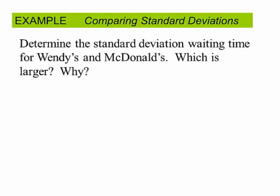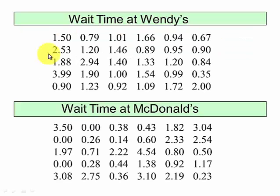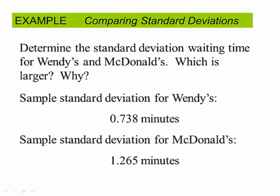Okay, let's go back to our McDonald's and Wendy's example. If we were to take this data set here from this sample and the one from this sample and compute the standard deviations of both, you would see that the standard deviation for Wendy's is 0.738 minutes and the standard deviation for McDonald's is 1.265. So there's more variation in the McDonald's waiting time than Wendy's. Wendy's is more consistent.